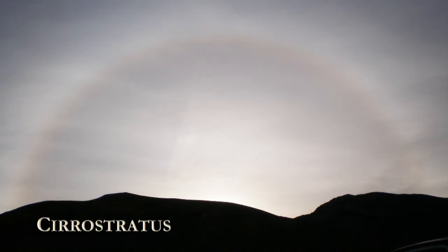Cirrus clouds are found in the higher altitudes. A halo around the sun or moon can be used to identify this cloud. This cloud is mostly made of ice crystals and gives the appearance of a very thin film, with the disk of the sun or moon extremely distinct.